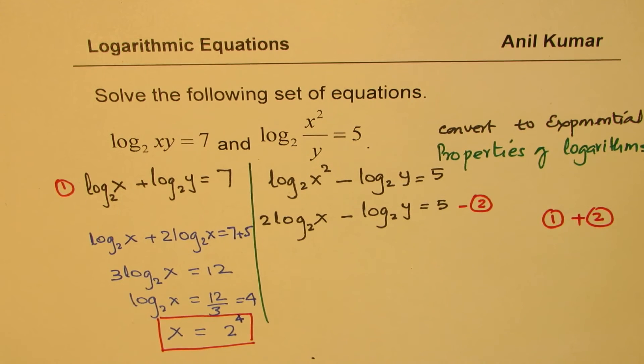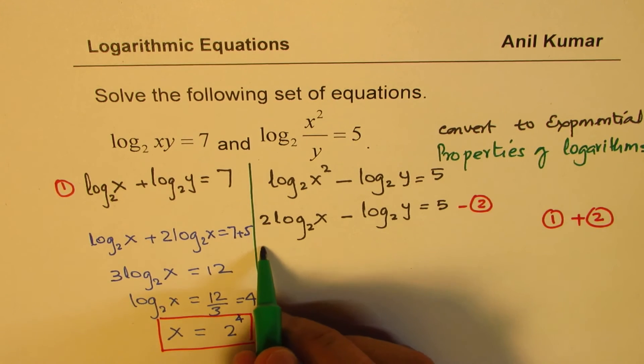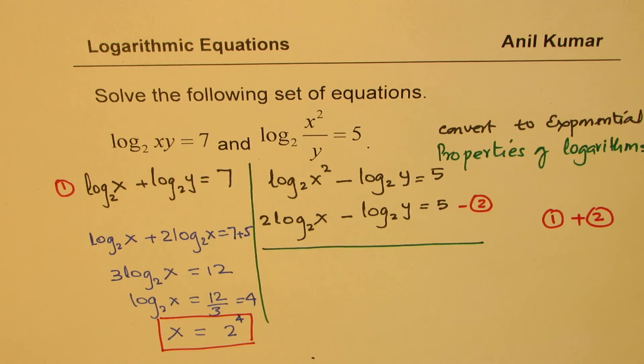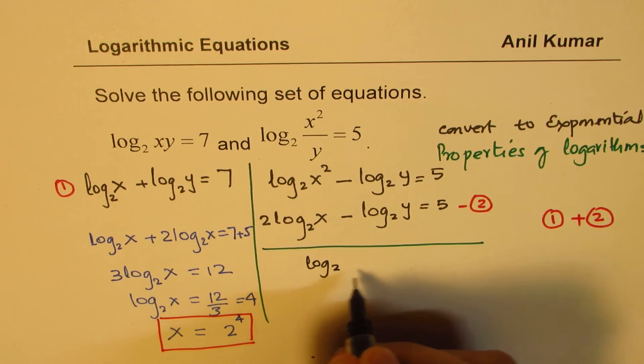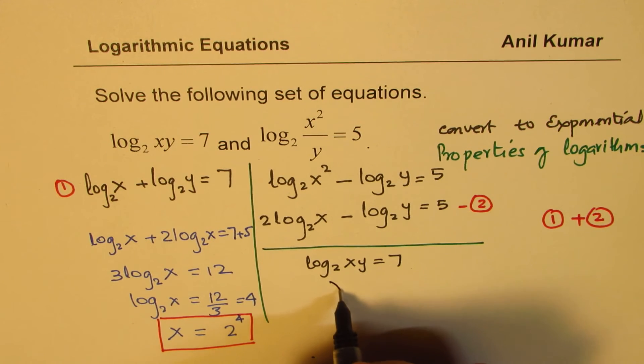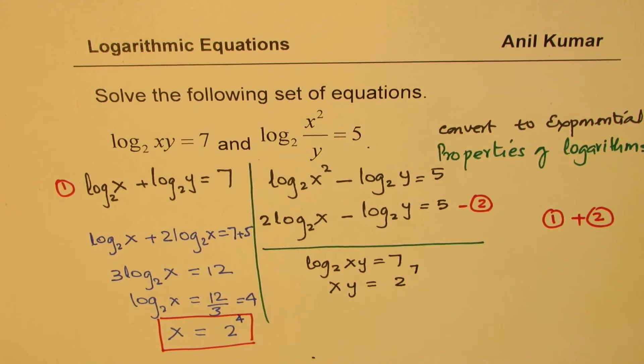Now what is y equals to? Well, let's get back to where we wanted to go earlier and get the value of y. So let's begin with the very first equation again. We have log base 2 of xy equals 7. I can say x times y equals 2 to the power of 7. We know now that x equals 2 to the power of 4.